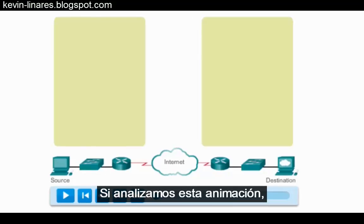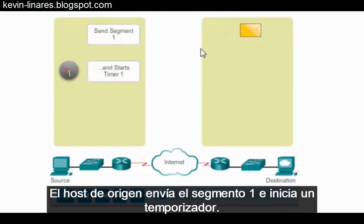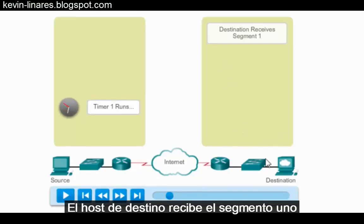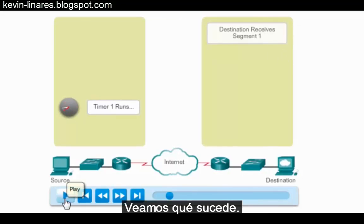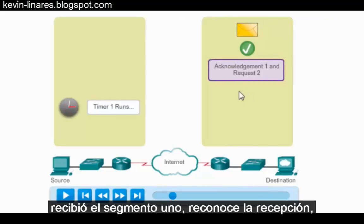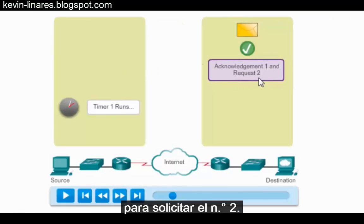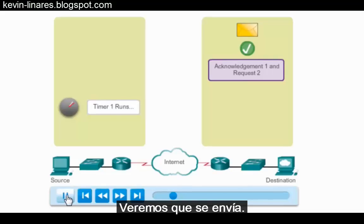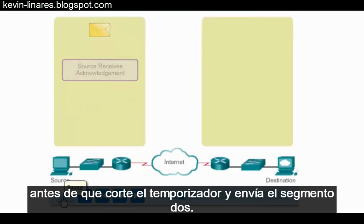If we look at this animation, we can see this process in action. I'll press play. The source host sends segment 1 and starts a timer. You can see the timer is running. The destination host receives segment 1, and since it's received segment 1, it's going to send an acknowledgement. We can see that the destination host has received segment 1, acknowledges the delivery, and is going to send an ACK 2, requesting number 2. It received 1, so it sends a request for 2. There goes the acknowledgement — the source receives the acknowledgement before the timer expires and now can send segment 2.